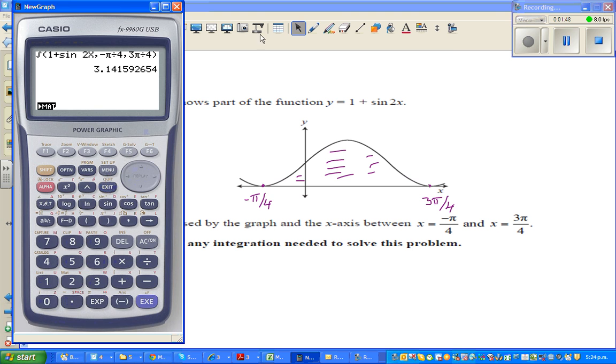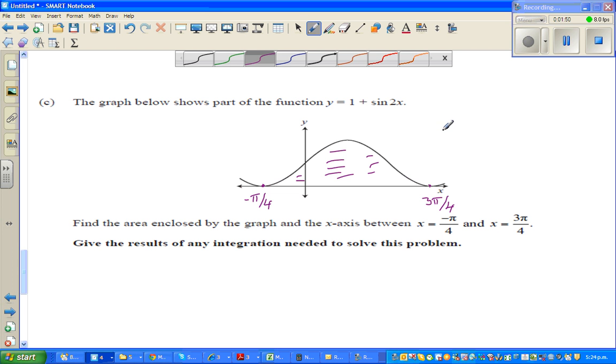So the answer that I've got is pi. So I already know the answer, that my answer should be pi. So I'll work towards pi. So here, to find the area under the curve, you do the definite integration of this function from minus pi by 4 to 3 pi by 4.